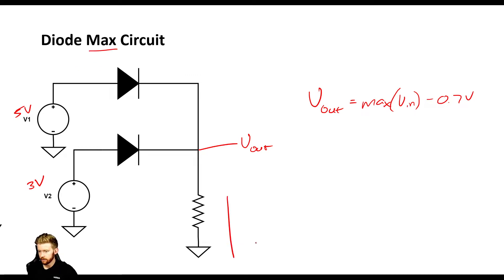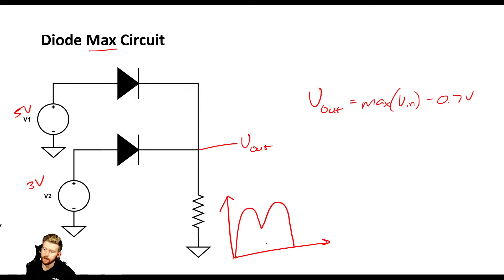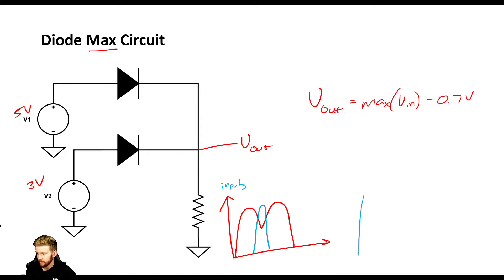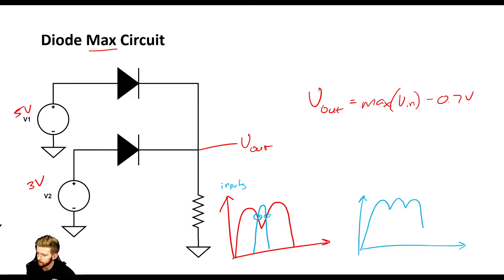Let's say we have two input signals. One input rises and peaks, shown in red, and another input shown in blue that peaks at a different point. Looking at the output, it starts by following the red line — the maximum — and then once the blue line takes over as the higher value, the output follows blue. Then red becomes the maximum again and the output follows red. So our output is always tracking the maximum of all input signals.